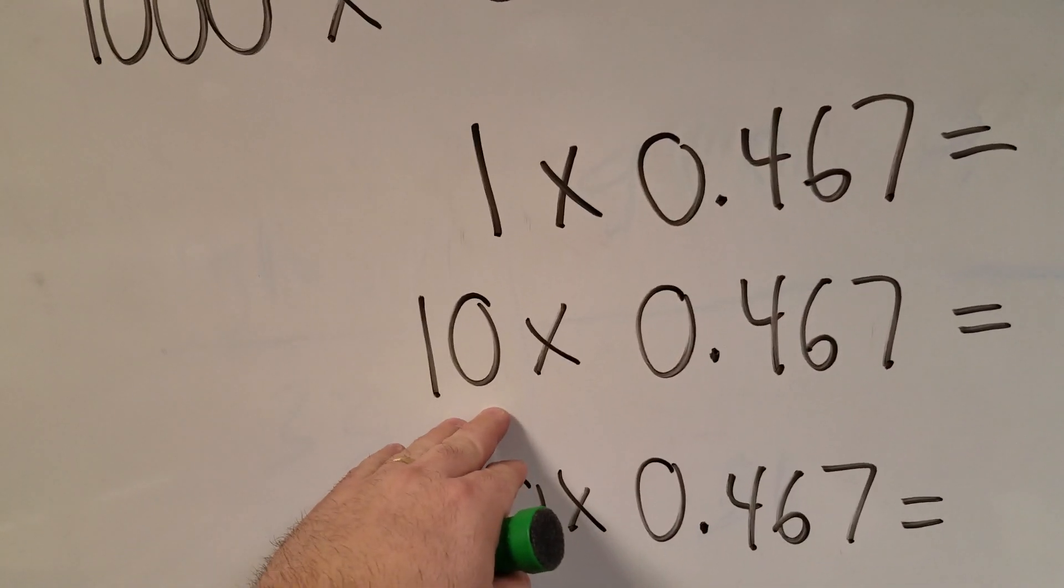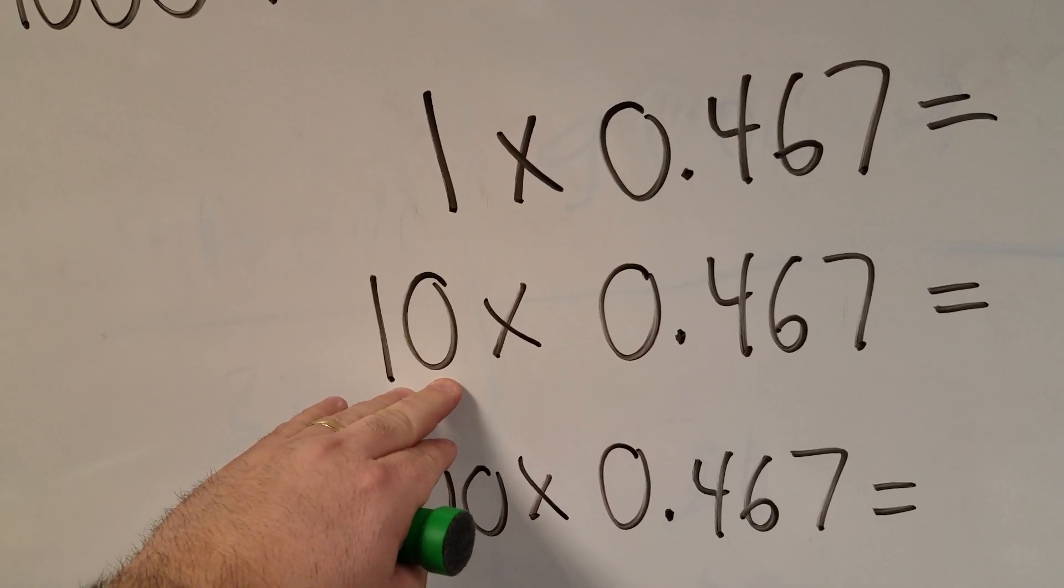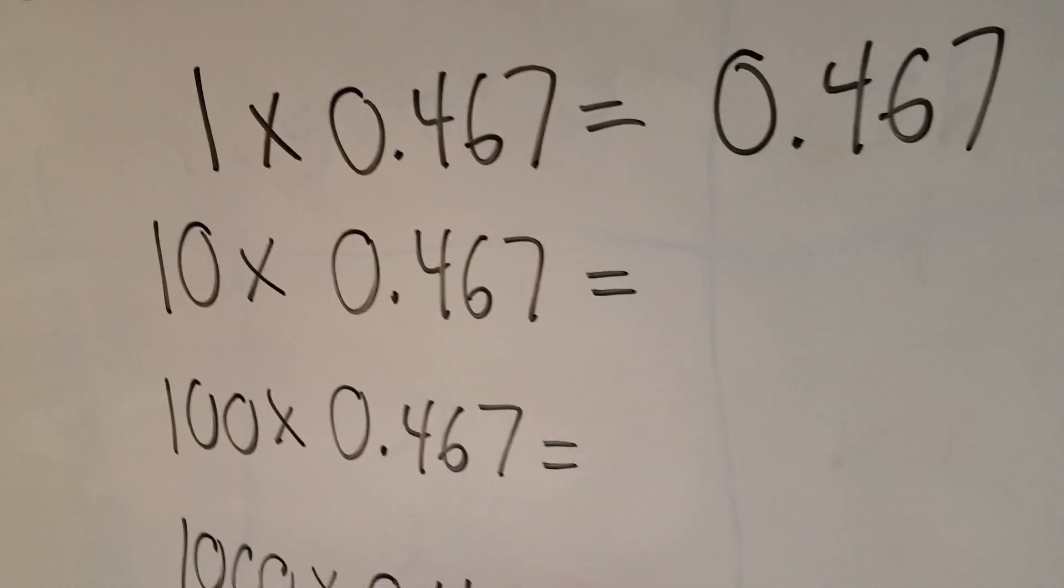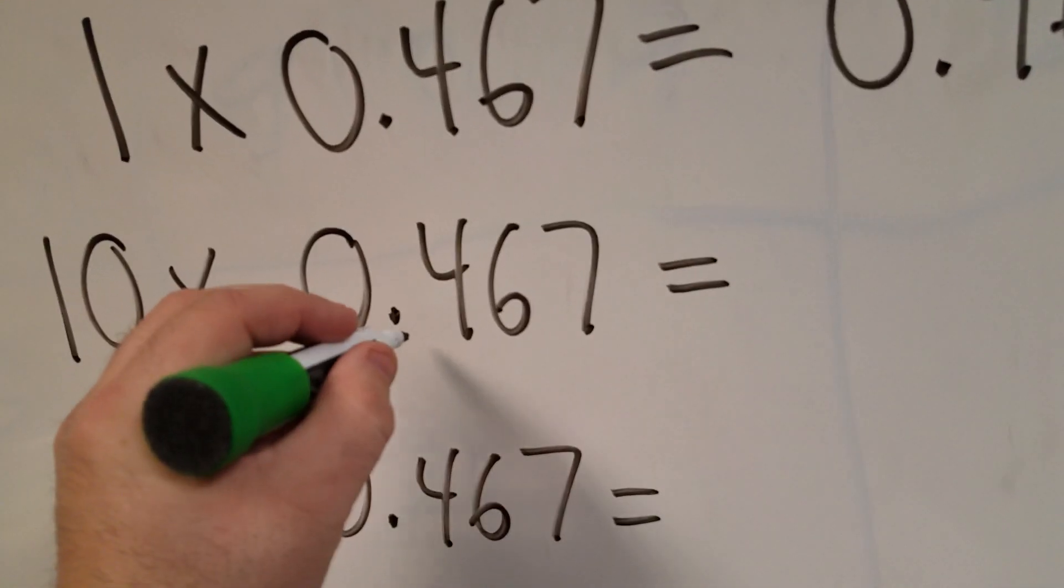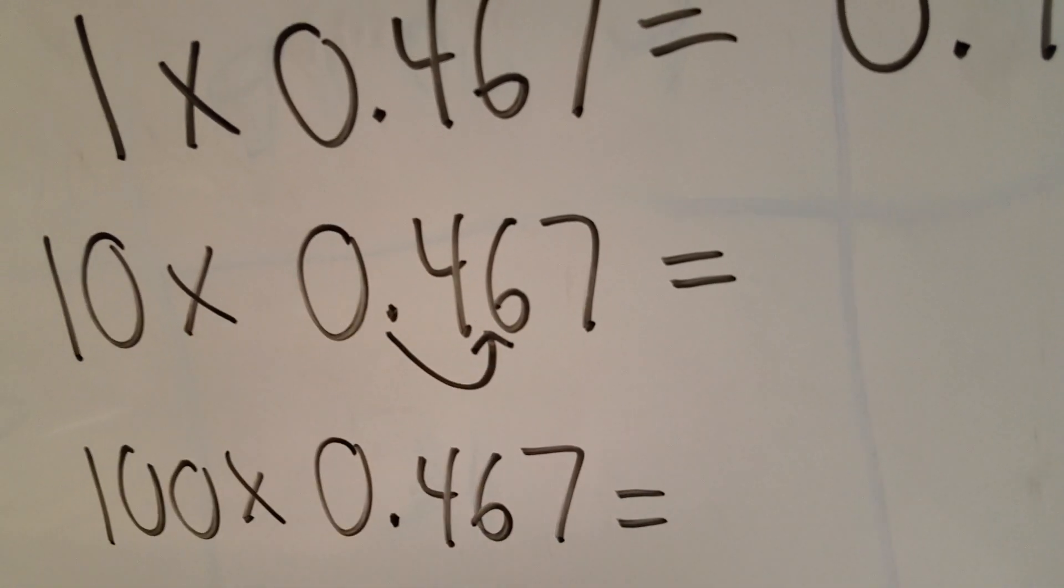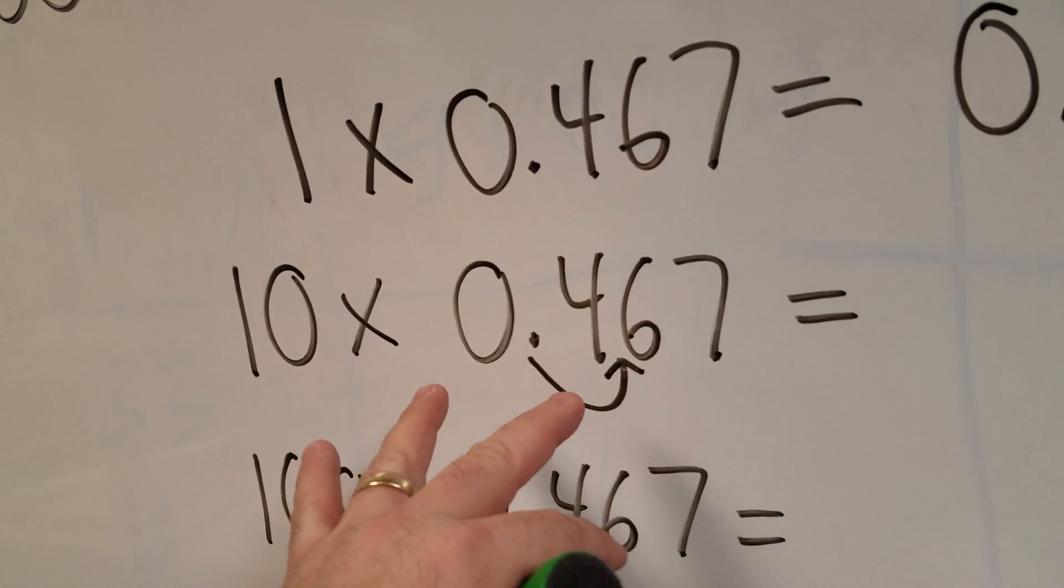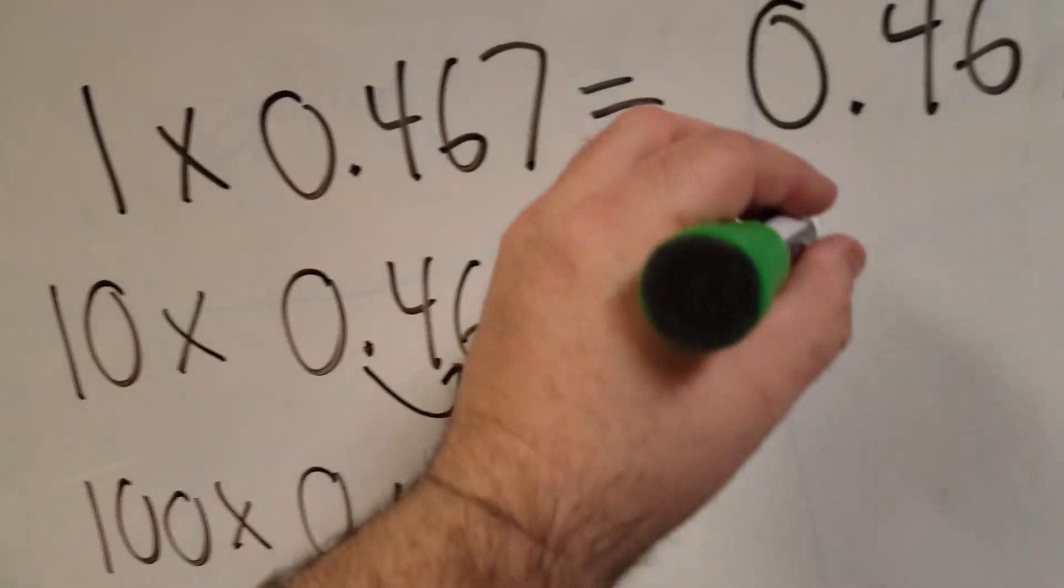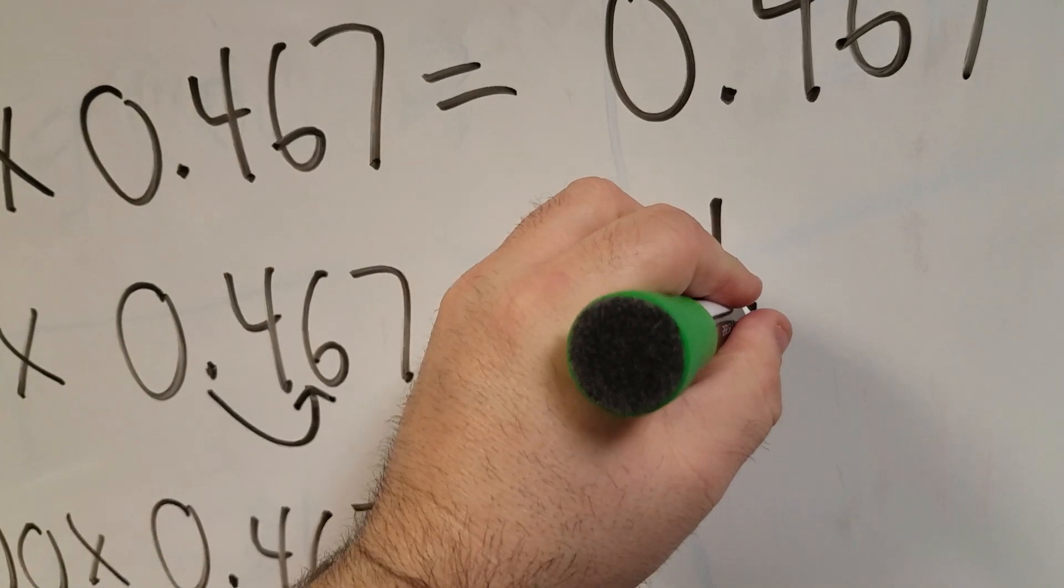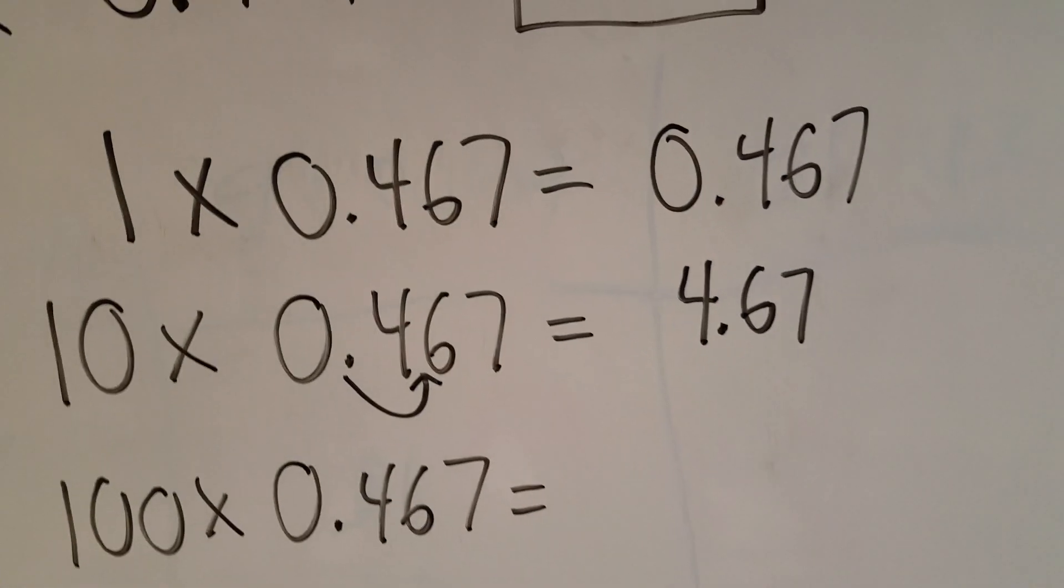Now what happens if I add a power of 10? So 1 power of 10, 10 times 467 thousandths. That means I'm literally going to just move the decimal over 1 power of 10, because I'm making this bigger by 1 power of 10. So by moving that over, I now have 4 and 67 hundredths. I move the decimal over one spot.